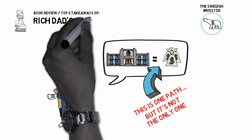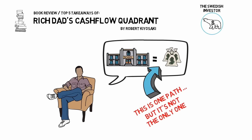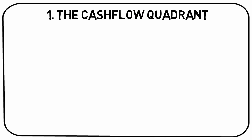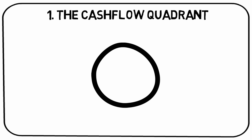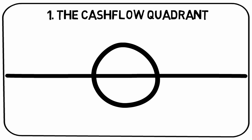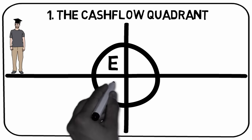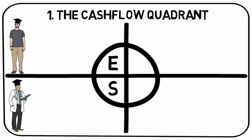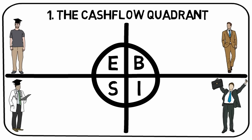In Rich Dad's Cash Flow Quadrant, Robert Kiyosaki explains that there are four different paths to become wealthy, but some of them are more efficient than others. Takeaway number one: the cash flow quadrant. The cash flow quadrant is a simple model that explains that wealth can come from four different sources. Which quadrant you belong to depends on where most of your income comes from. The four quadrants are E the employee, S the small business owner or self-employed, B the big business owner, and I the investor.